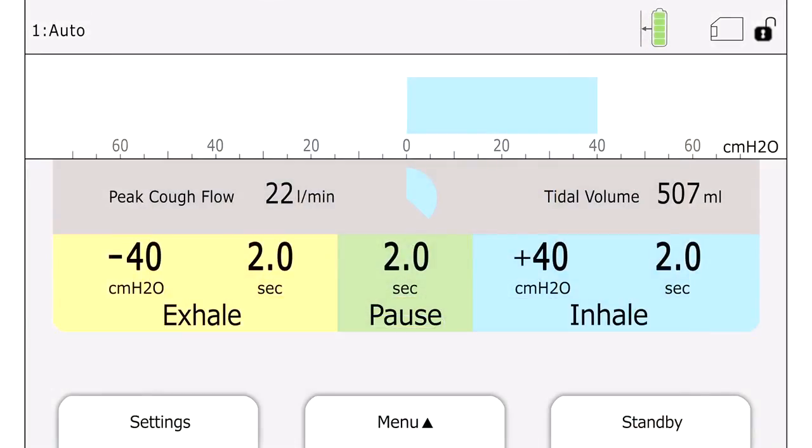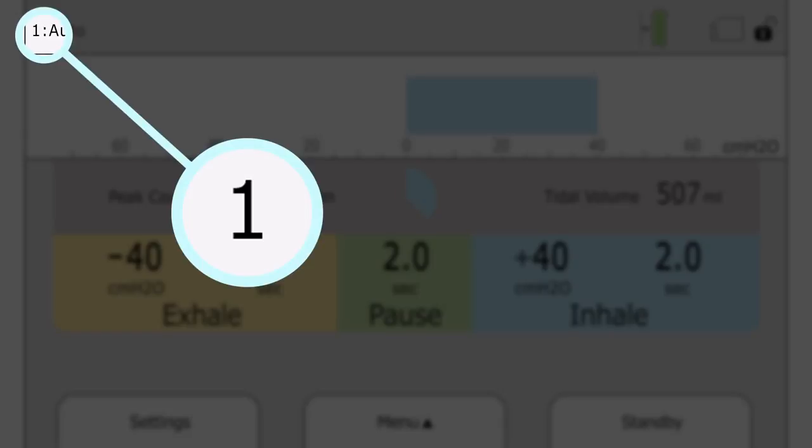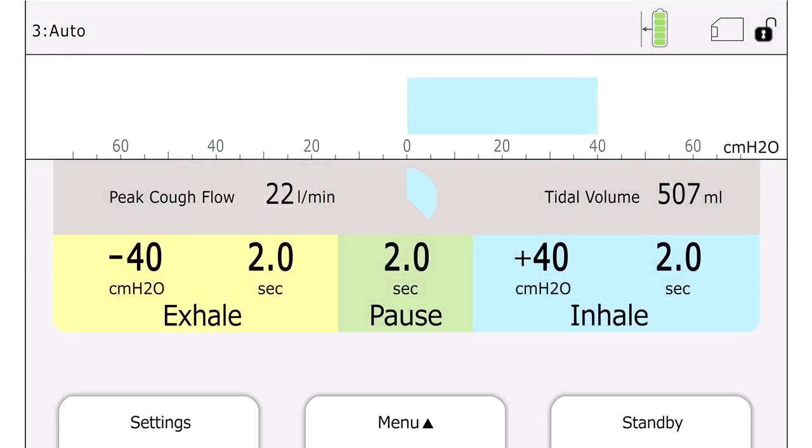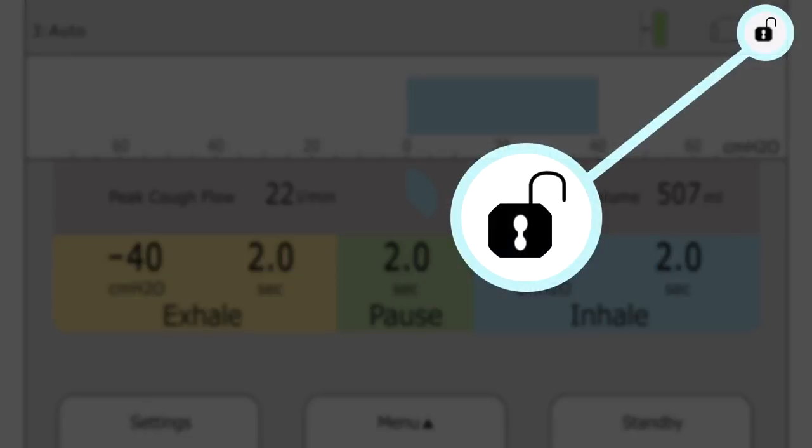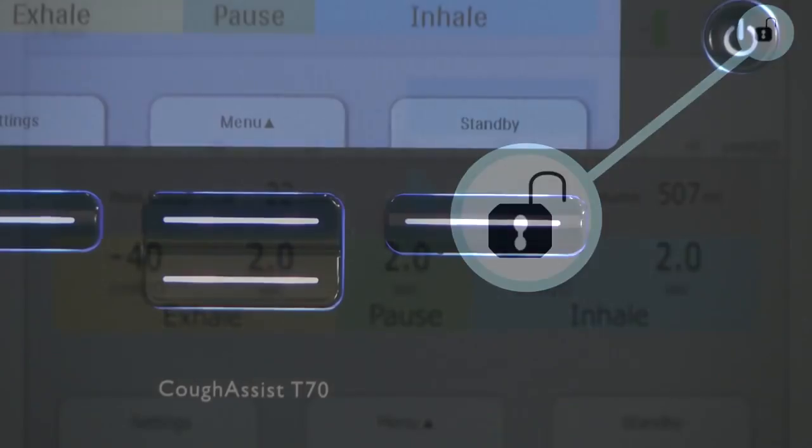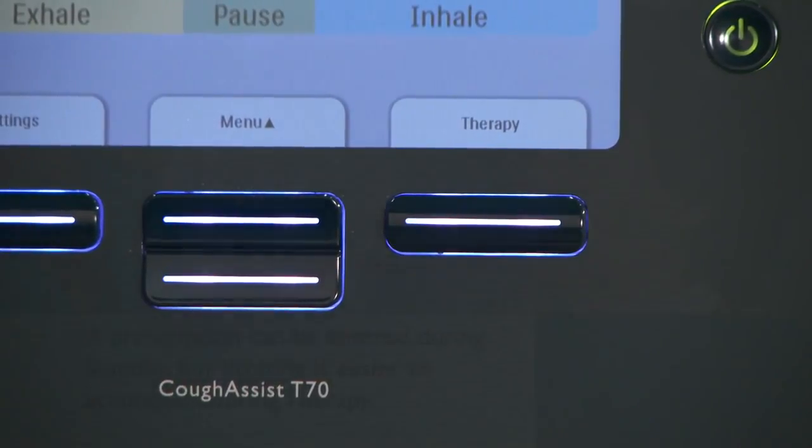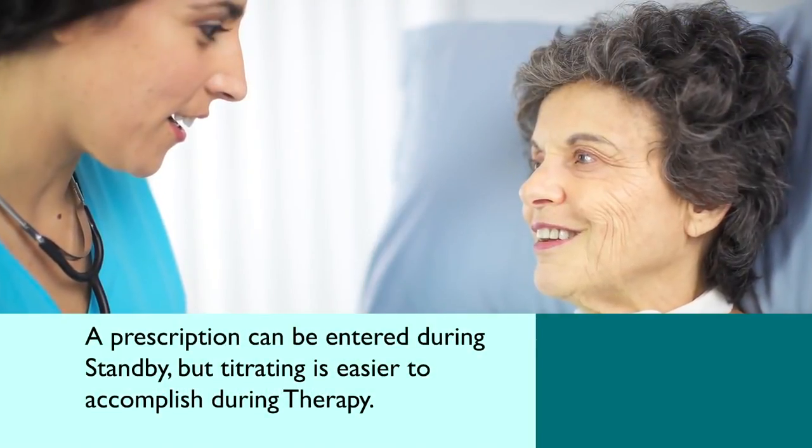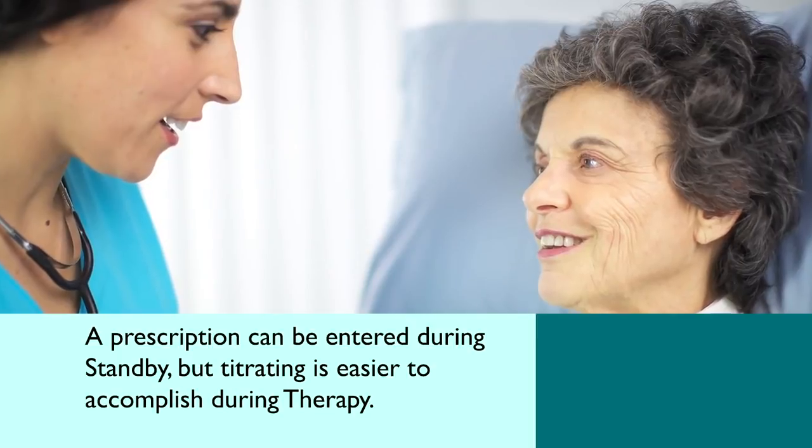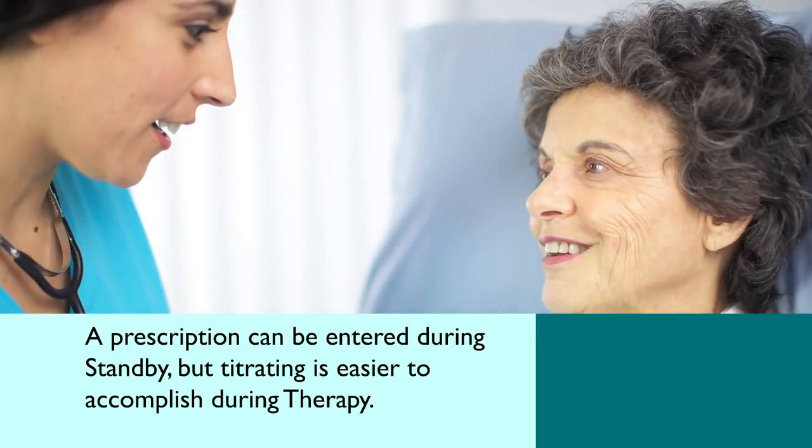Three unique prescription settings can be stored in CoughAssist T70, so you can quickly select treatment pressures based on a patient's current needs. On the upper right hand side of the screen, if you see a small open lock icon, you will be able to make changes to the settings. Changes can be made to the settings during standby or therapy. A specific prescription can be entered during standby, but titrating is easier to accomplish during therapy.